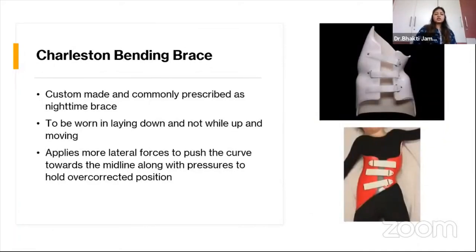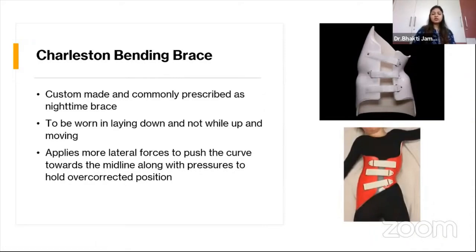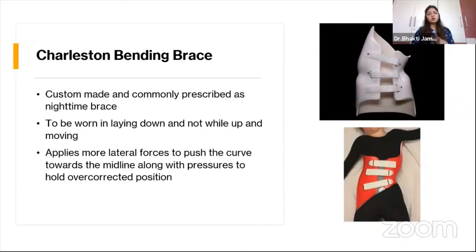The Charleston bending brace is most commonly used for night bracing to add lateral forces to push the curve towards midline. It applies more pressure over the curvatures and puts the spine into an overcorrected position. For this reason, it is worn only in a supine lying-down position and not during movement, as it applies overcorrected pressures — hence it is used mostly during nighttime.